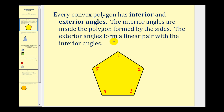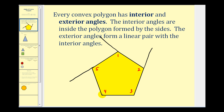The exterior angles form a linear pair with the interior angles. Looking at angle two, we can either extend this side here or this side here to form the exterior angle. It doesn't matter which side we extend to form our linear pair. Let's extend this side, then work around the pentagon extending each remaining side.